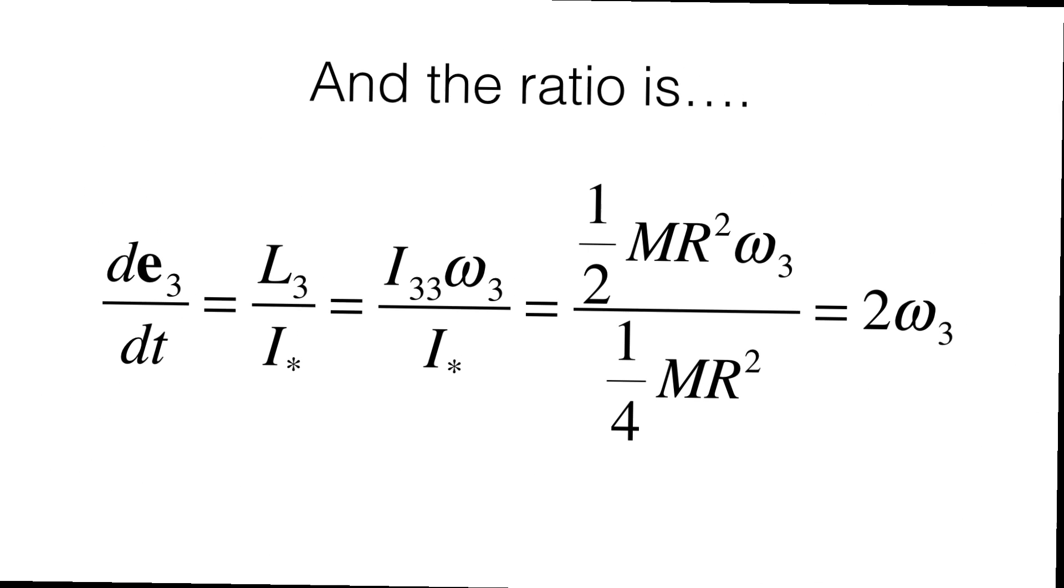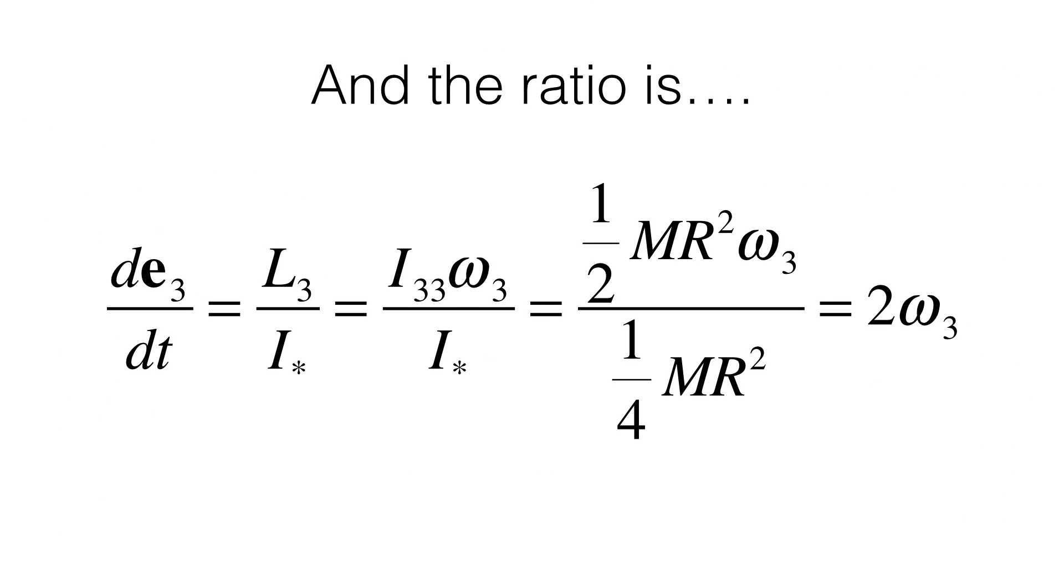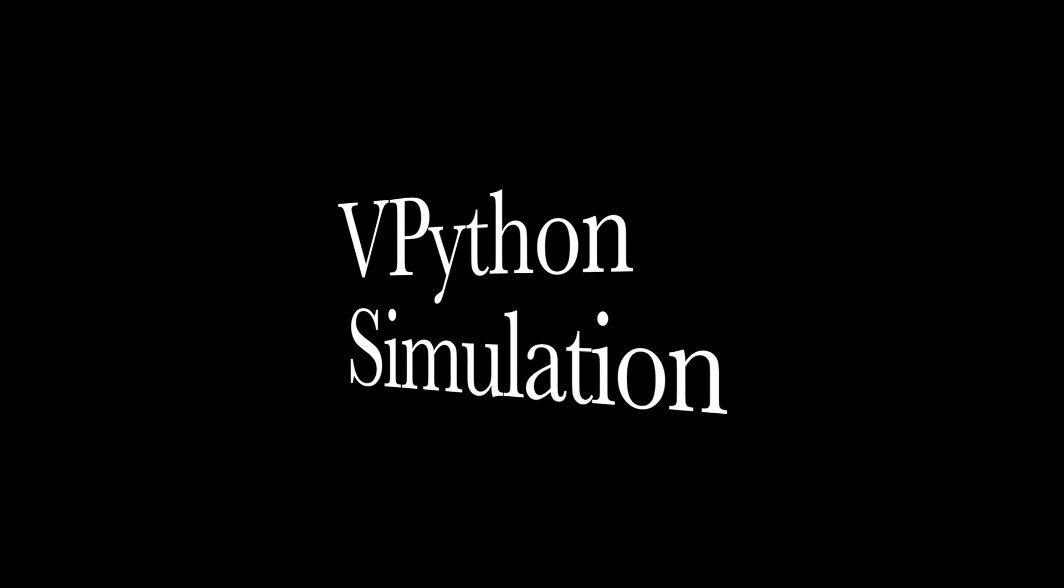Then, after simplifying this result, it is clear that E3 precesses about the angular momentum with respect to the center of mass at a rate of two times the third component of the angular velocity. But since the third component of angular velocity is the spin of the plate and the precession of E3 is the wobble, we see this result is exactly as we observed qualitatively. That is, the wobble of the plate is twice as fast as the spin.